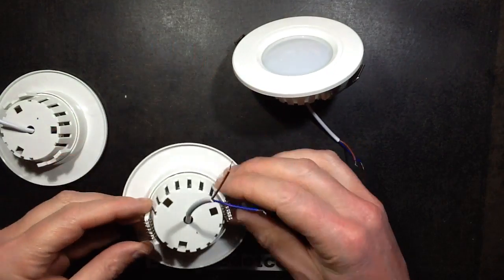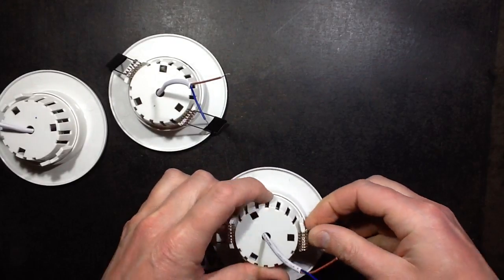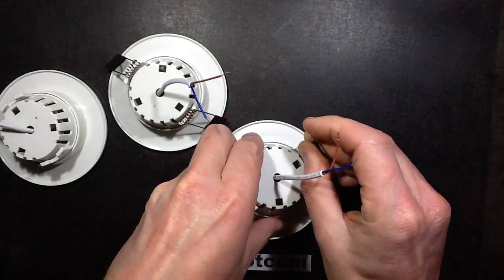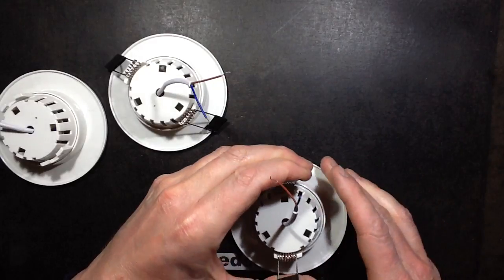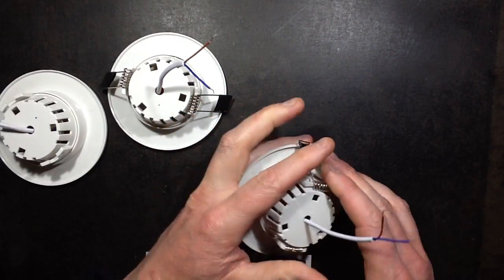They come with the typical downlight spring clips, but they're plastic. You just don't feel comfortable about putting something like that, stretching these really powerful springs back against plastic to put them through the holes, but having said that it seems to work.